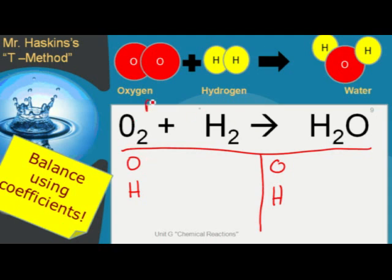As you can see, on our reactant side, we have two oxygens and two hydrogens. And on the product side, we have two hydrogens and one oxygen.